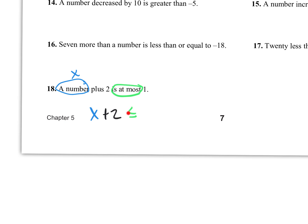At most means less than or equal to, at least means greater than or equal to. So for problem 18: 'a number plus 2 is at most 1' becomes x + 2 ≤ 1. Subtract 2 from both sides: x ≤ -1. That's your answer.